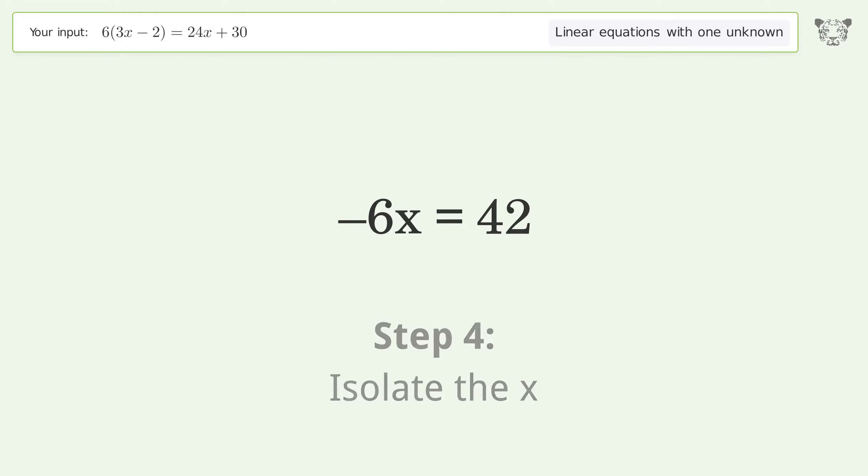Isolate the x. Divide both sides by negative 6 and cancel out the negatives.